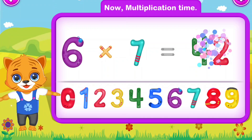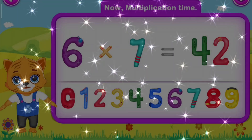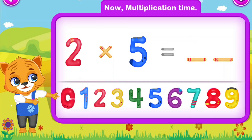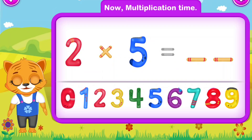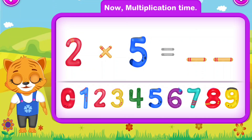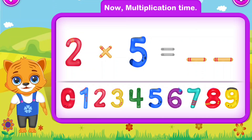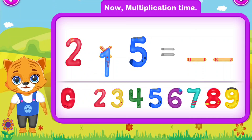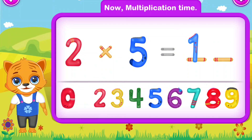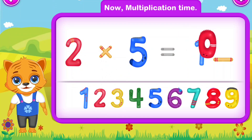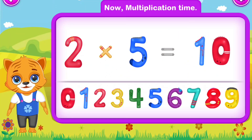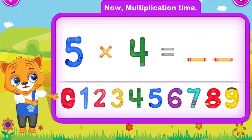Forty-two. Awesome! Two multiply by five is equal to ten. You did a great job!